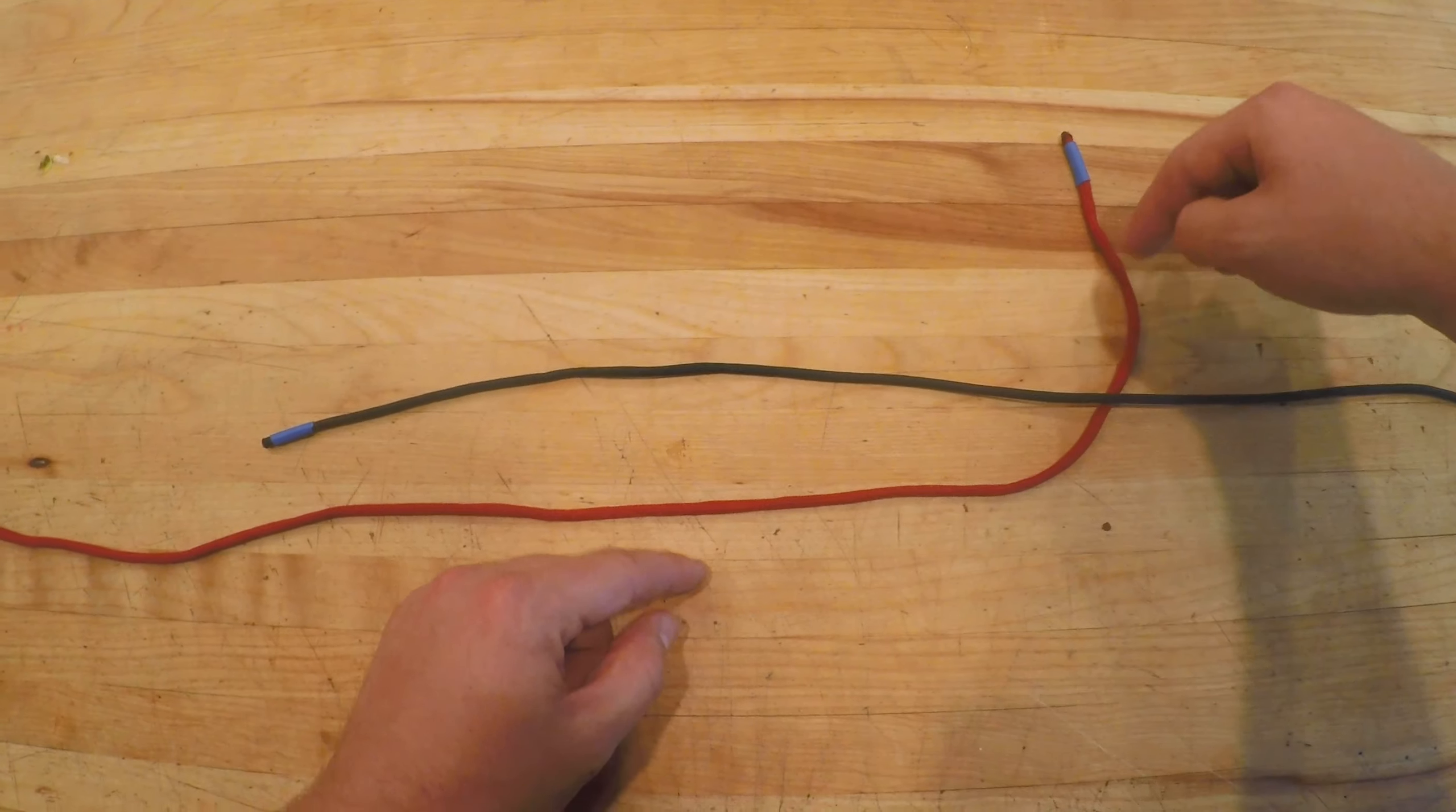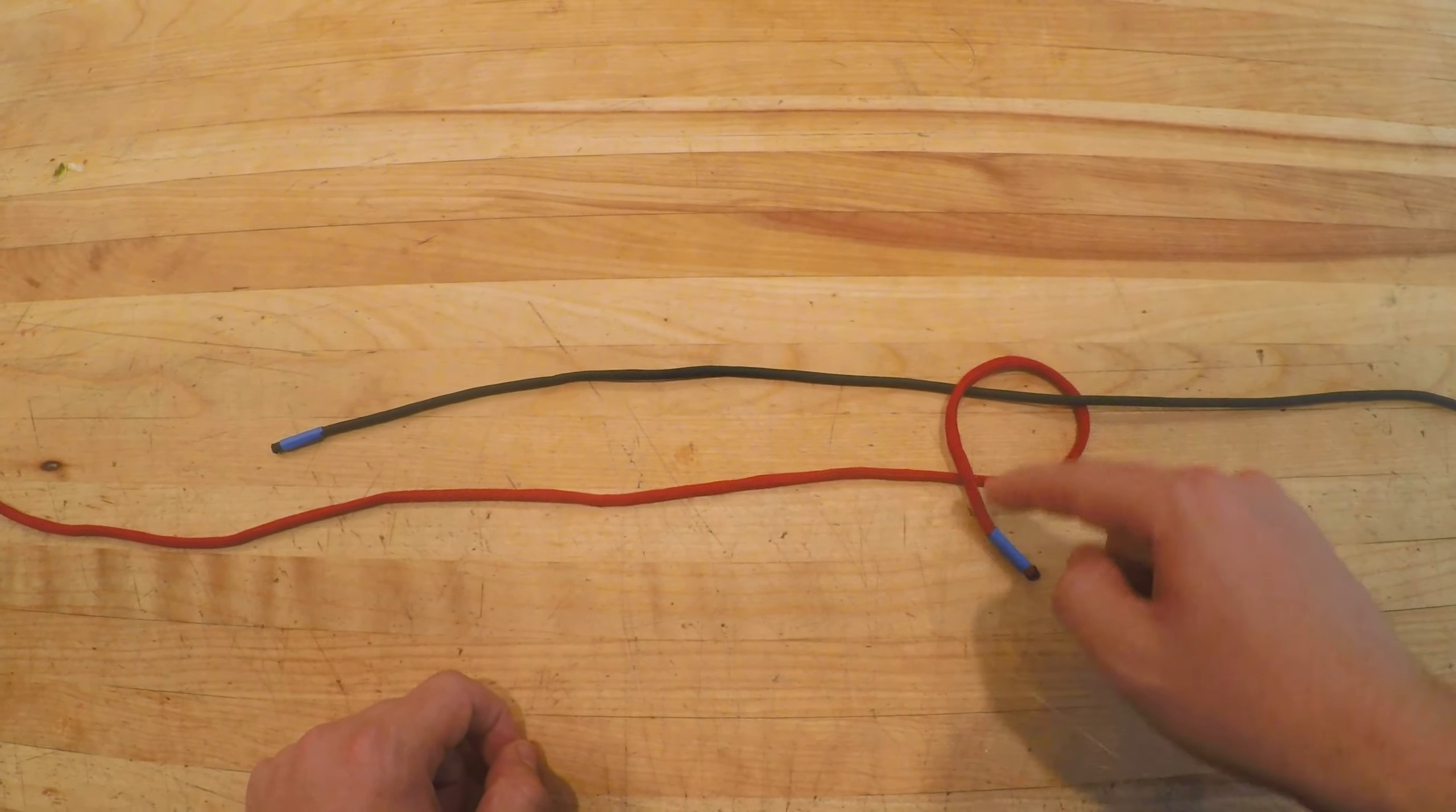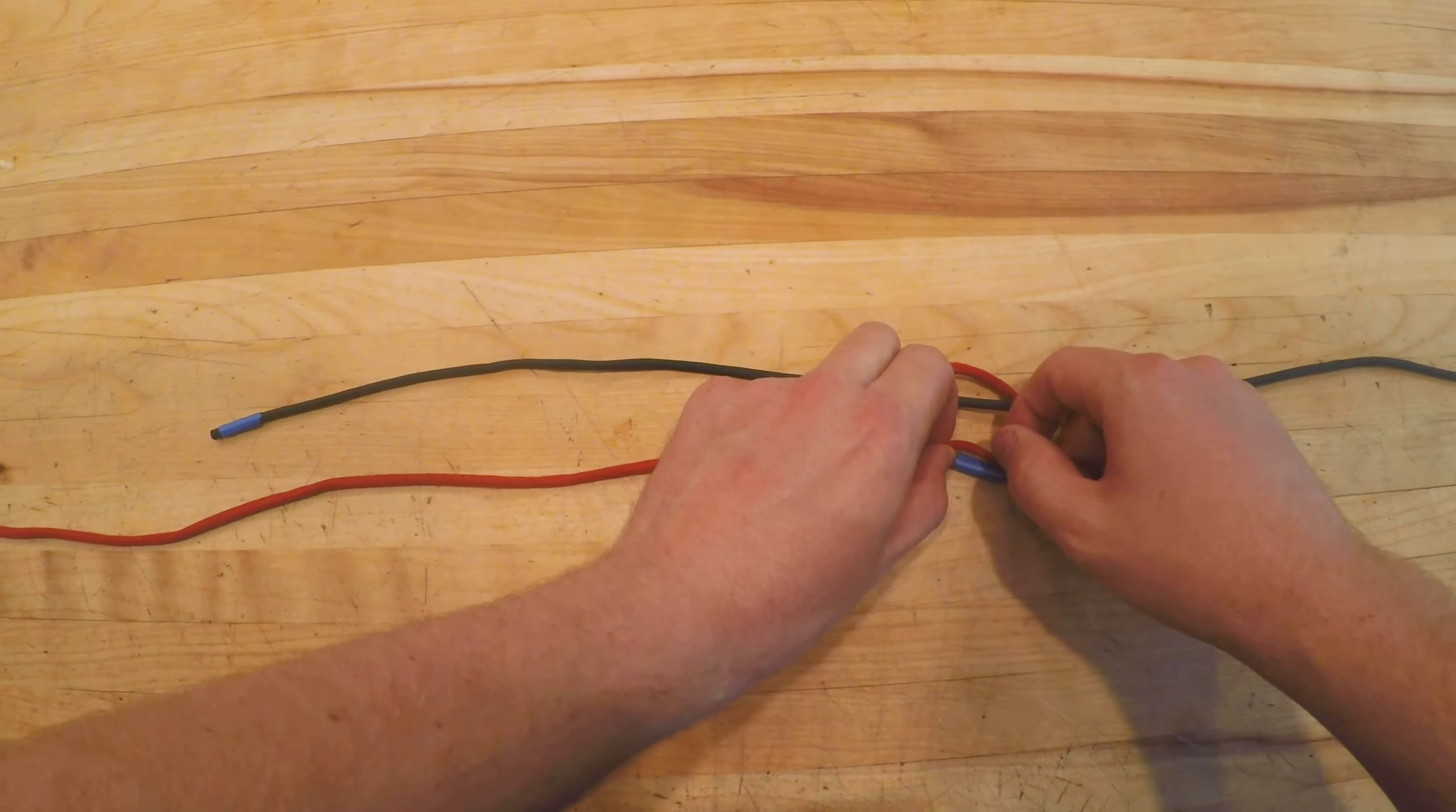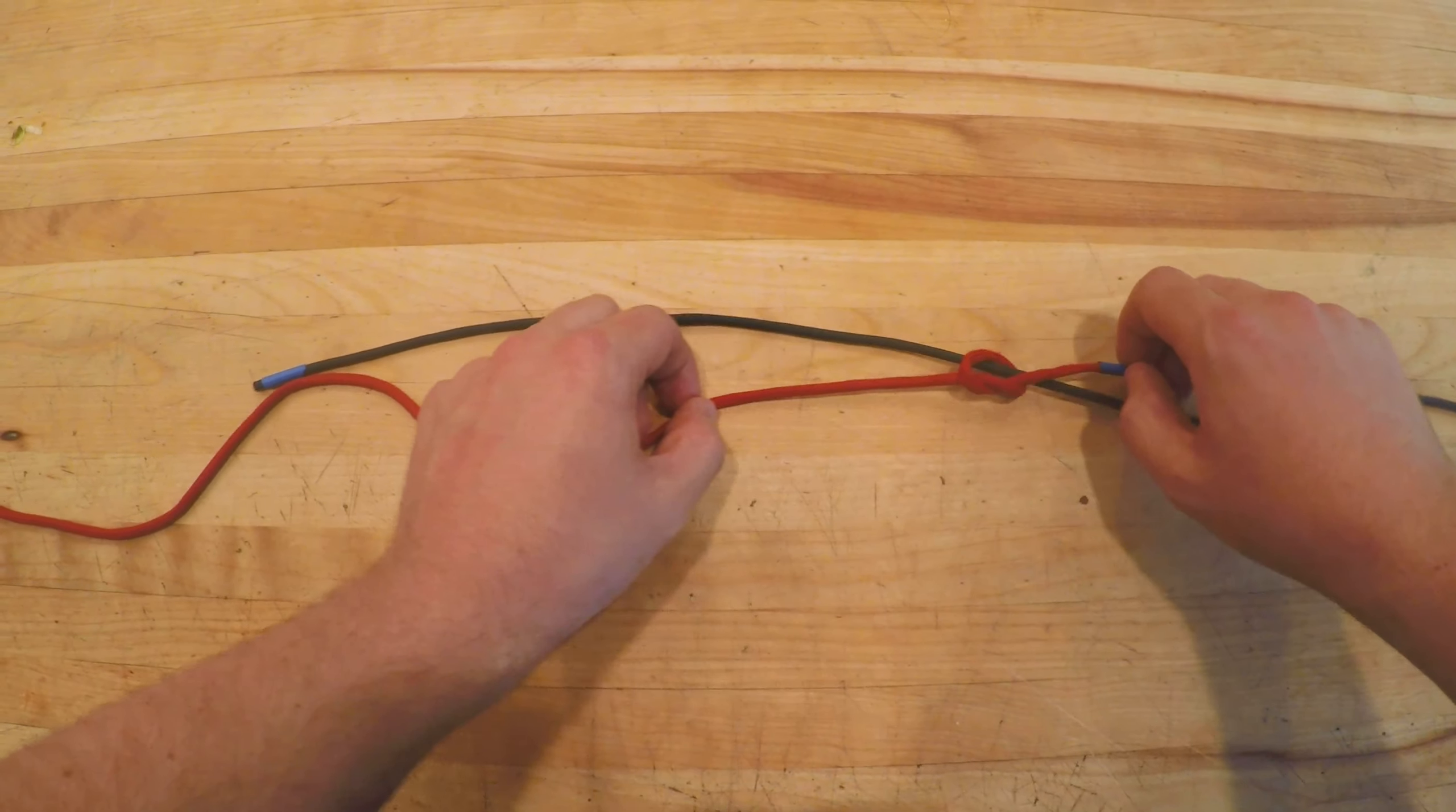After passing it underneath I'm going to bring it back around and lay it on top of both the green rope and my red rope. You'll see that we formed a loop. Next we're going to pass that red rope underneath and through that little loop we just made and pull tight.